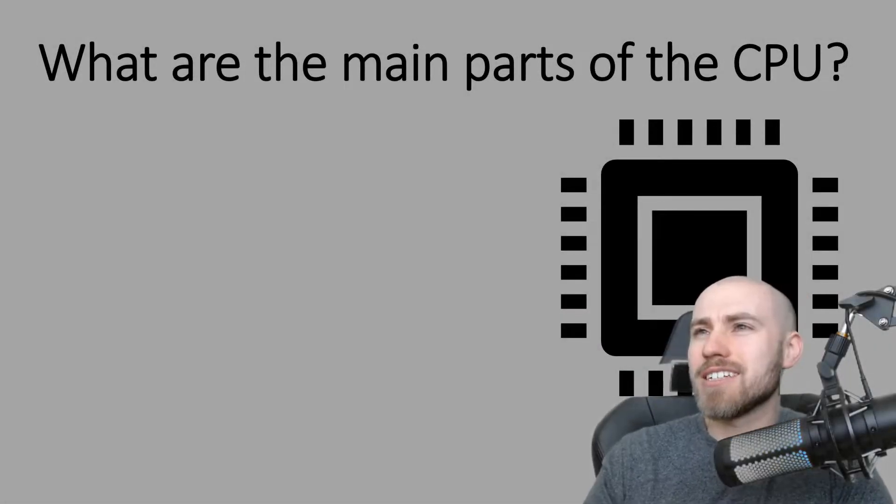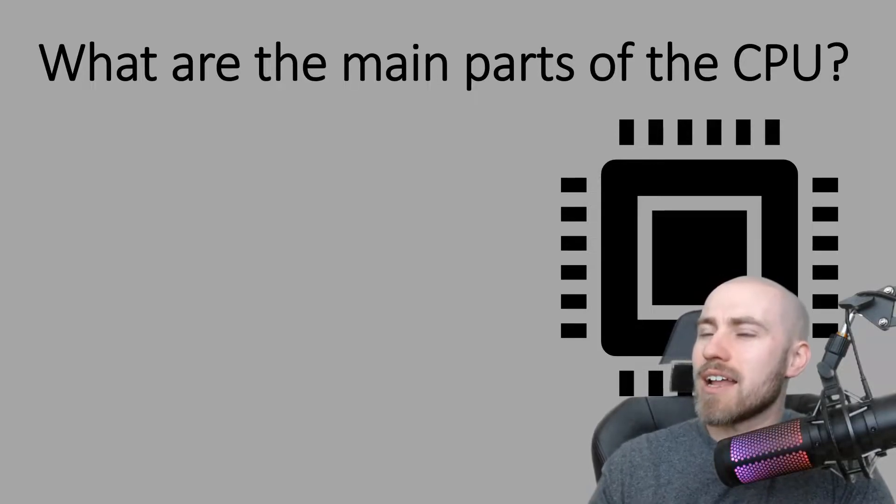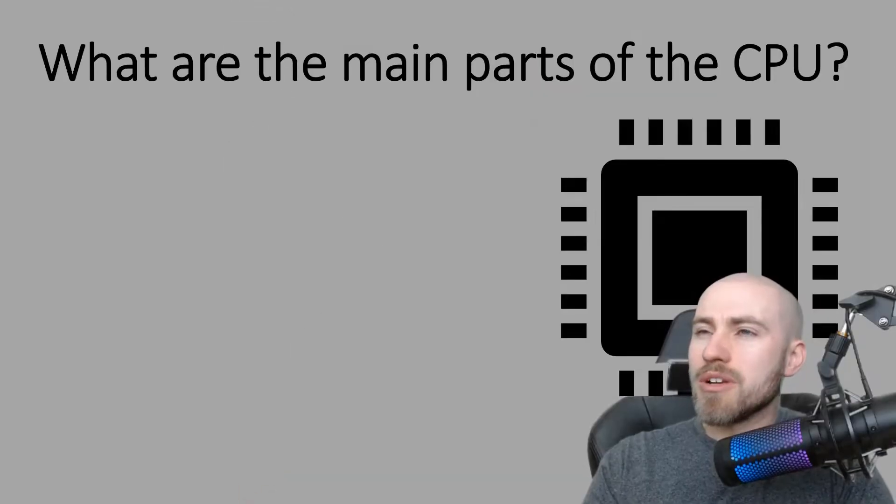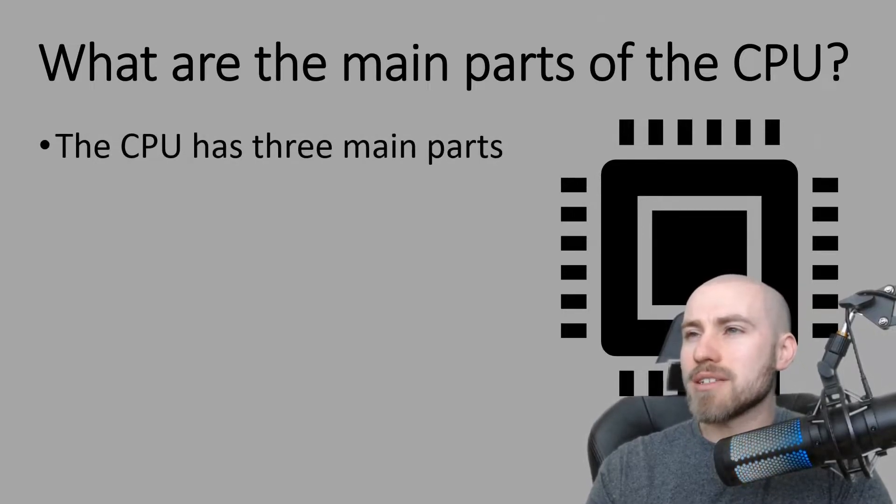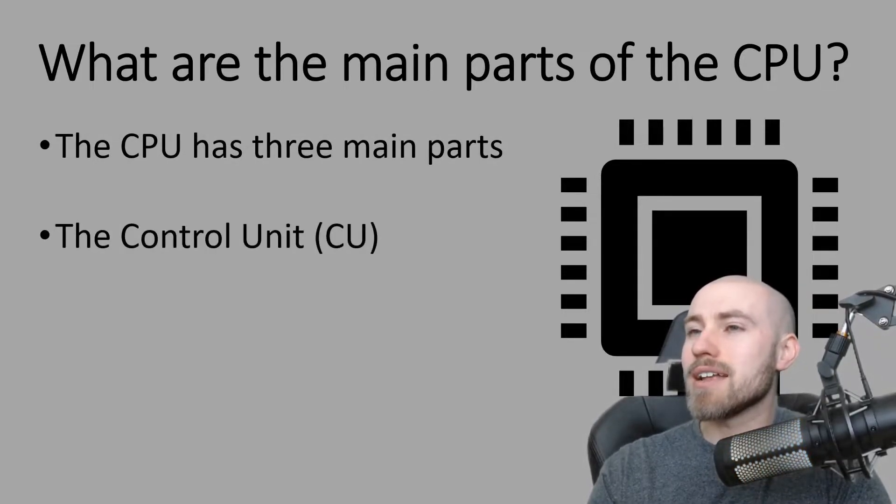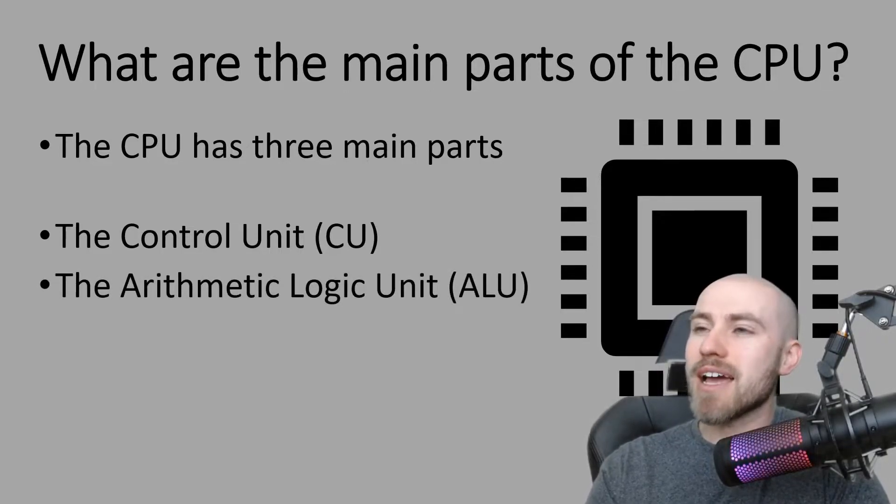Hello everybody. In this session we're going to be looking at what are the main parts of the CPU, and a little bit later in the session we're going to be looking at what's known as Von Neumann architecture, which is less confusing than it sounds. So we need to understand that the CPU has three main parts, and these are the control unit, the arithmetic and logic unit, and finally the cache.